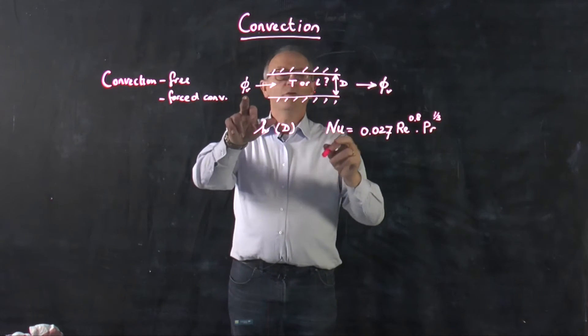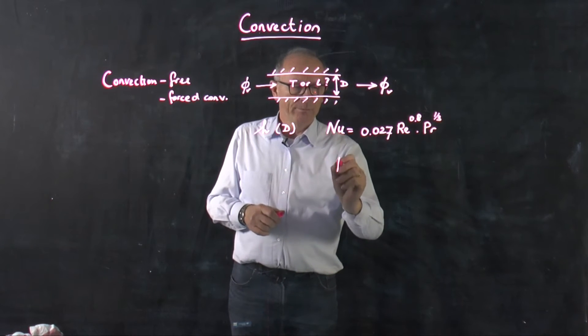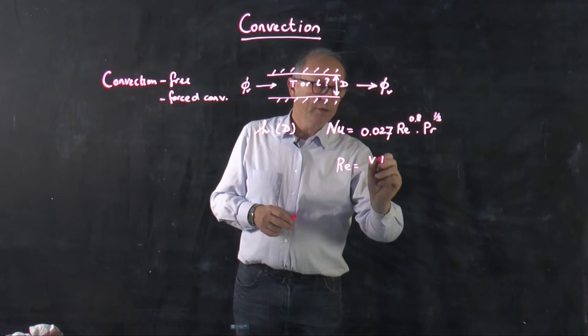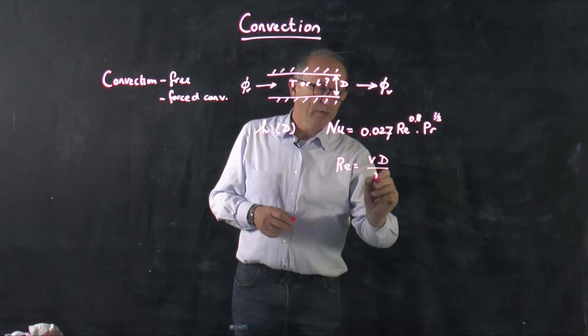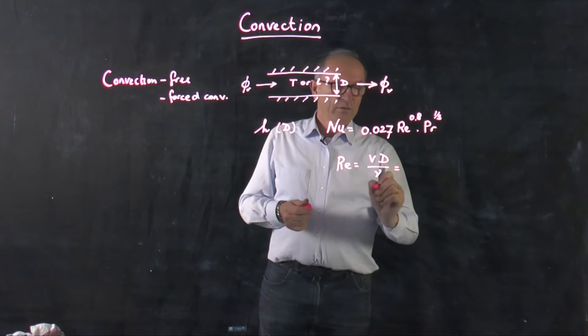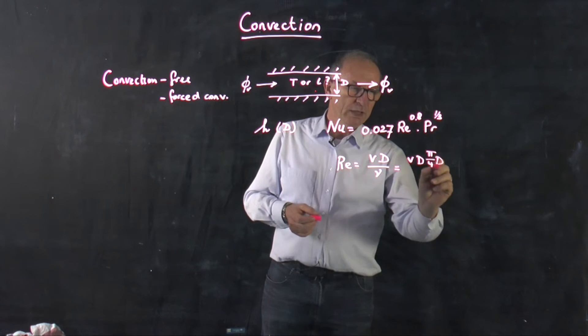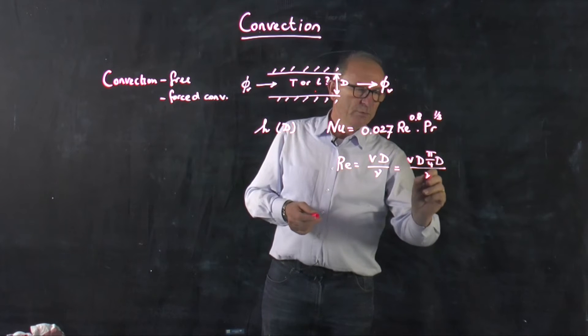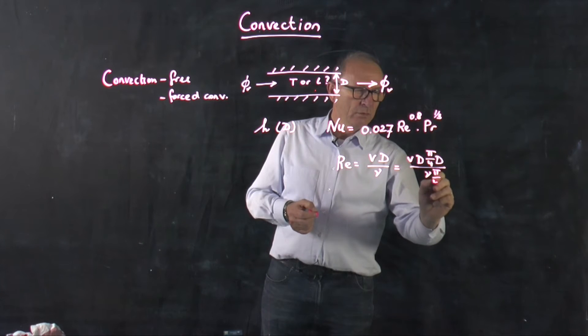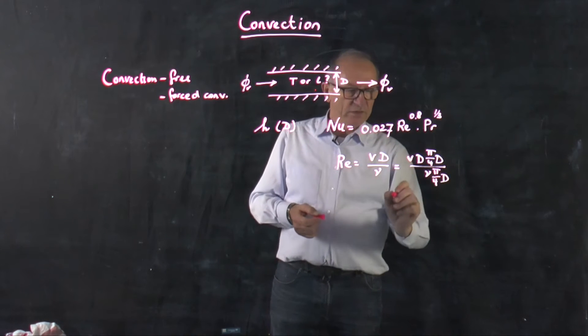We assume that the volume flow rate is constant, so that means that the Reynolds number, which is defined by velocity multiplied by diameter divided by kinematic viscosity, we have to rewrite them into a volume flow rate, which can be done by multiplying both sides by a quarter pi D squared. And if you do this, you see here, I apologize, should be quarter pi D squared also below.